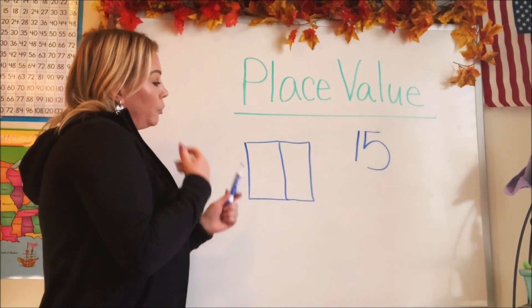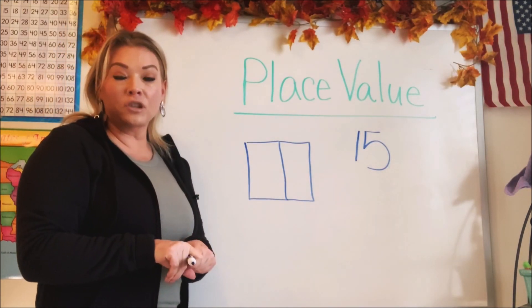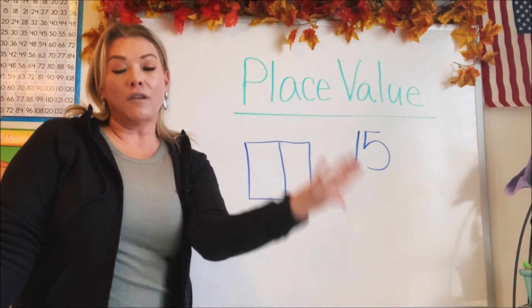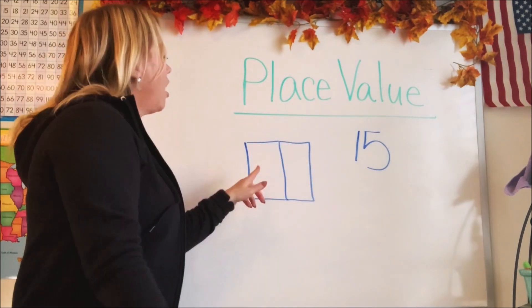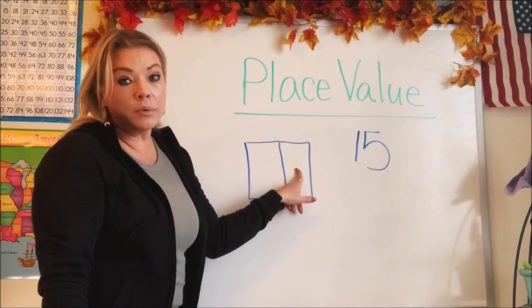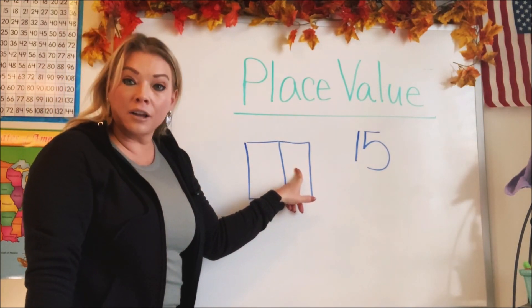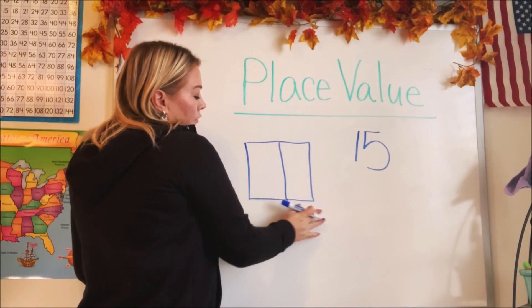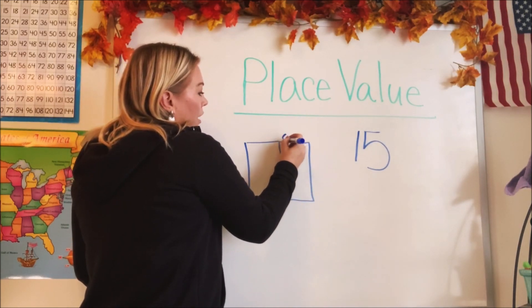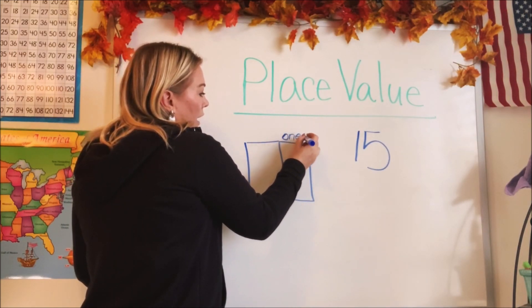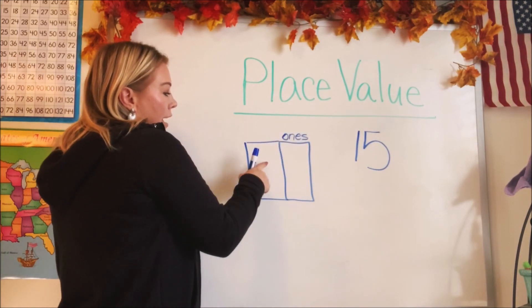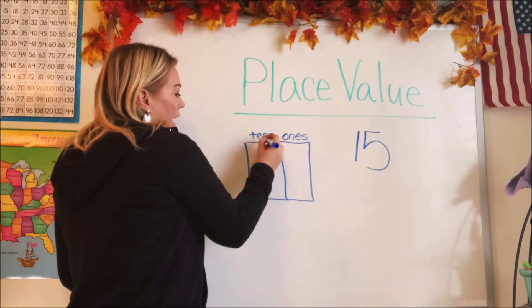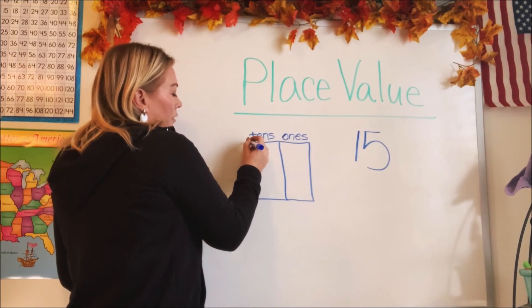Now each block has a certain name, just like the dolls were first, second, or third, or front, middle, and back. Our place values for numbers have names too. So the very first block we have here, we call this the ones place. And the next one we call it the tens place.